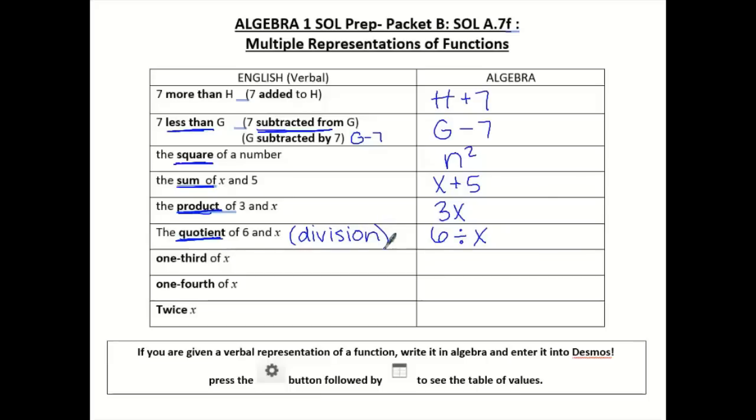When I see one third of X, I'm going to do one third X. This is the same as X over 3. One fourth of X. Remember that of is multiplication. I'm going to do the same thing. One fourth times X, which is the same as X over 4.